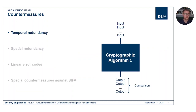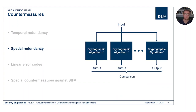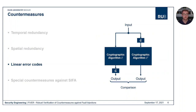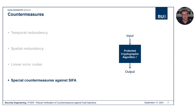There are different methods to protect a cryptographic implementation against fault injection attacks. The most simple one is to use temporal redundancy and encrypt or decrypt the same input several times. A similar approach encrypts or decrypts the same input in parallel, which is done by spatial redundancy. More advanced techniques use linear error correcting codes, where the input is encoded and processed in an adapted version of the cryptographic algorithm. And especially in the last three years, there were many dedicated countermeasures against cipher proposed.